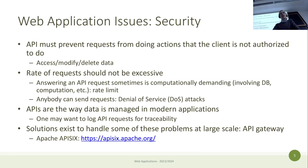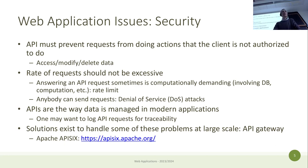It is the task of the API to prevent requests from doing actions that the client is not authorized or not supposed to do — in general, this means accessing data, modifying data, deleting data, or inserting data that they are not authorized for.